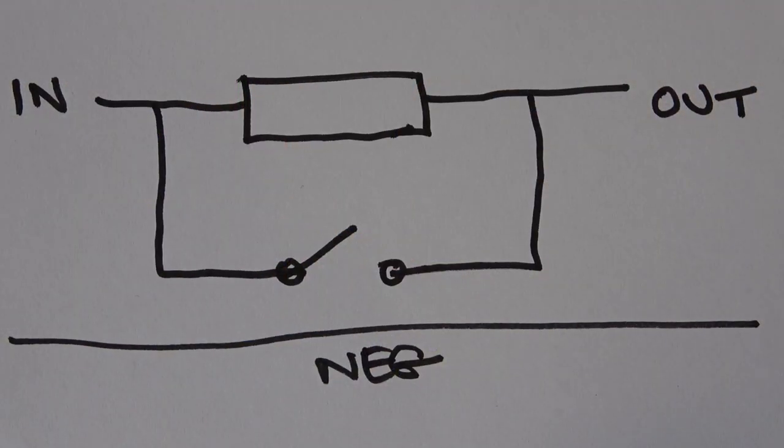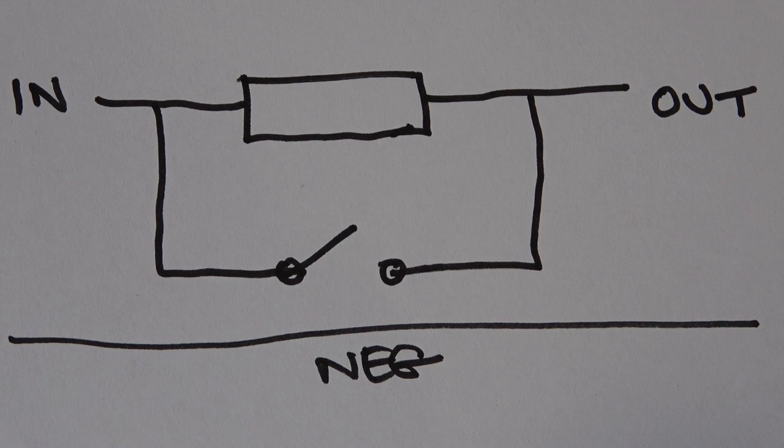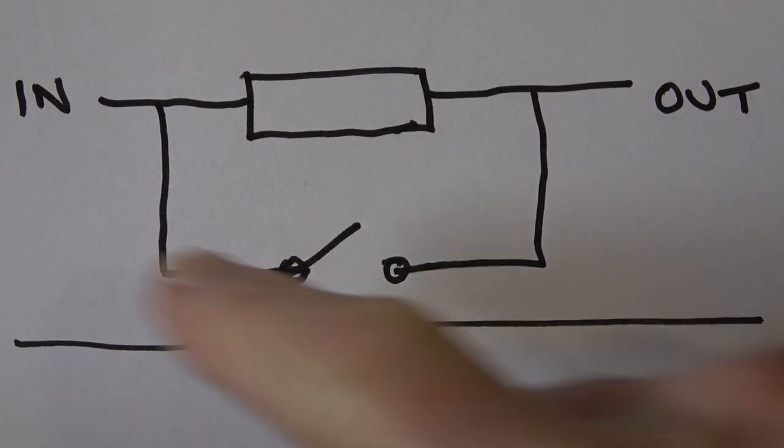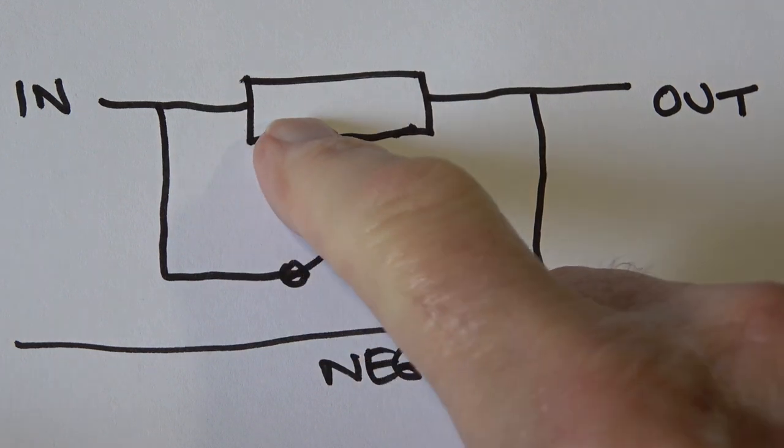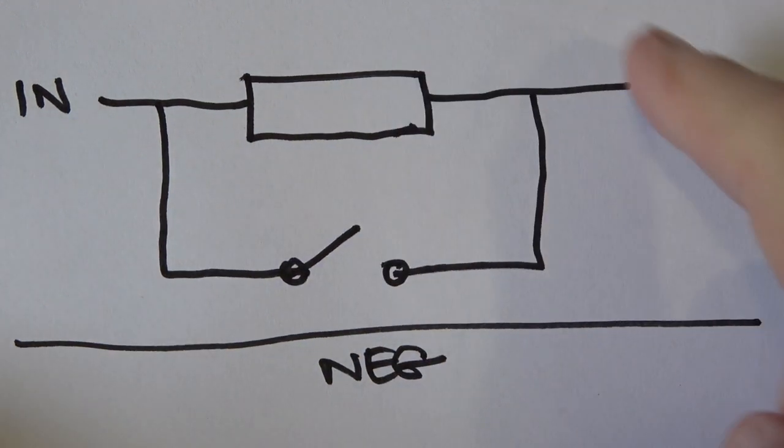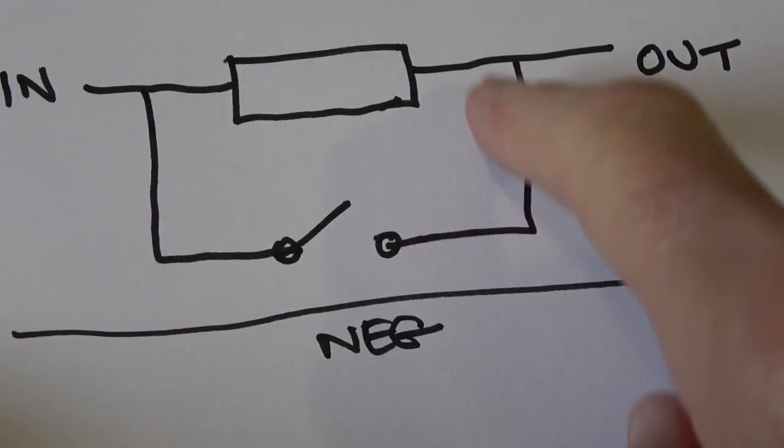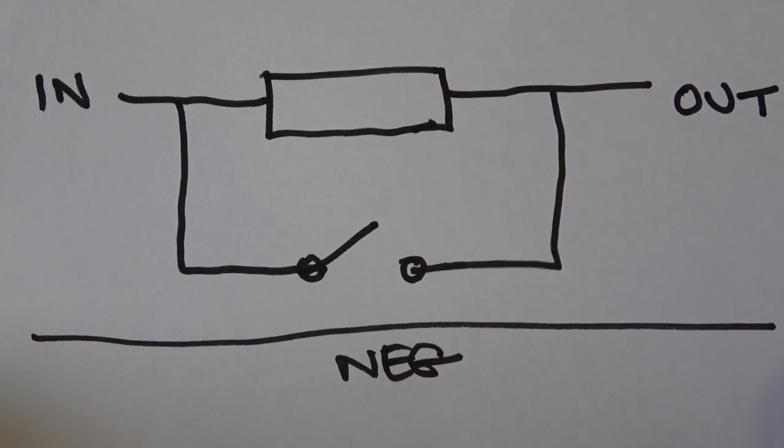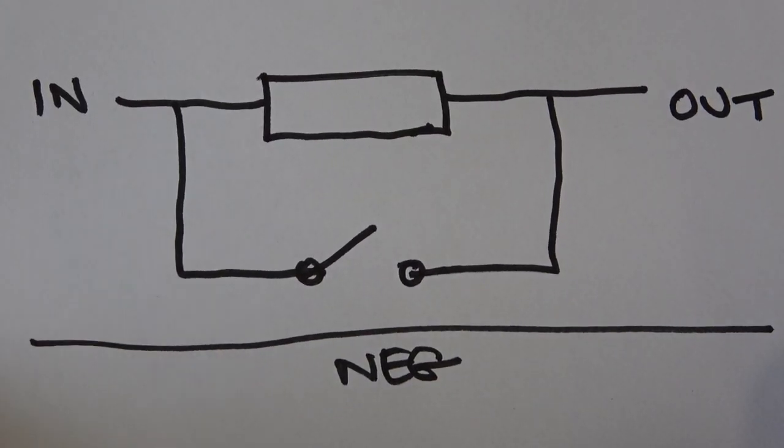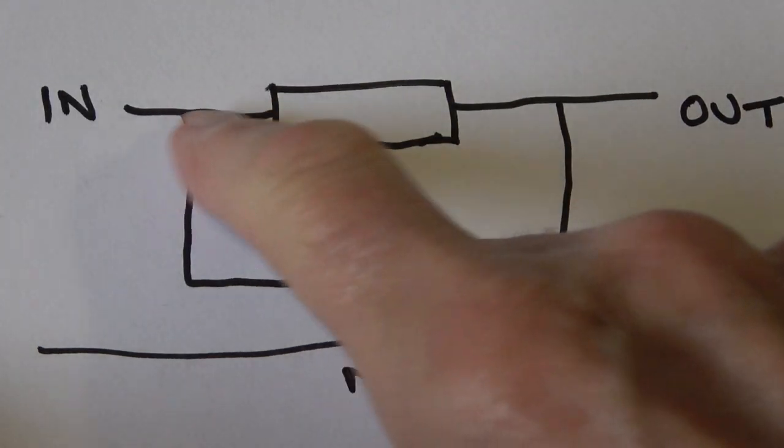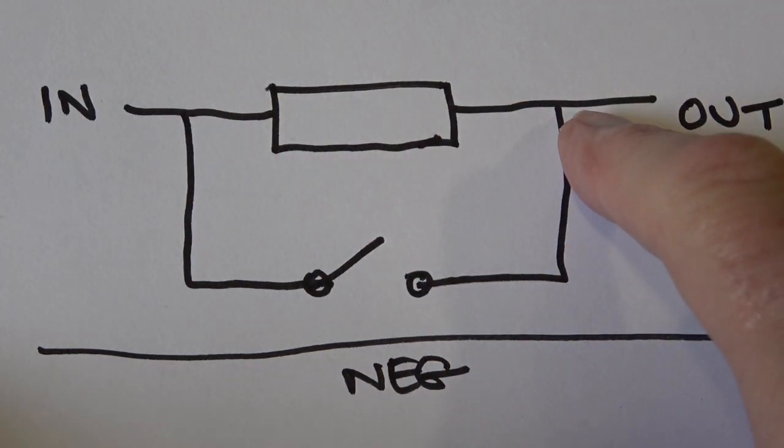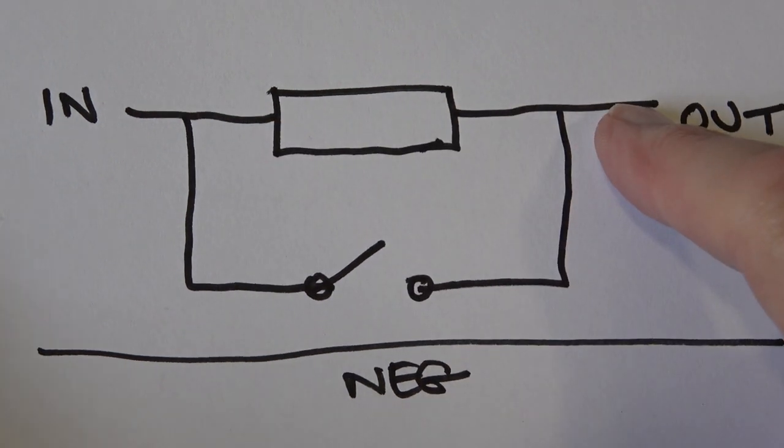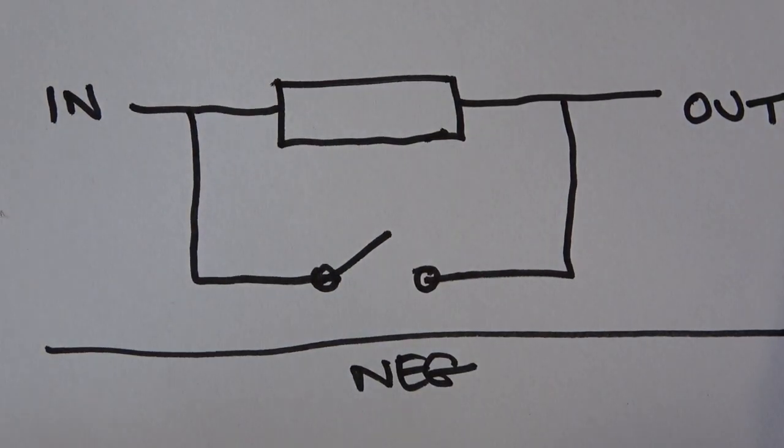This represents a very crude drawing of a surge limiter or current limiter. The mains power goes in here, there is a resistor here, and there's a switch across the resistor. The idea being when the power first comes on, this resistor is in circuit and limits the current that is capable of being drawn by the transformer.